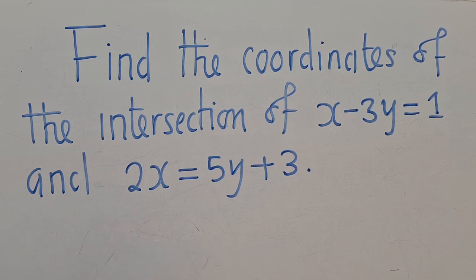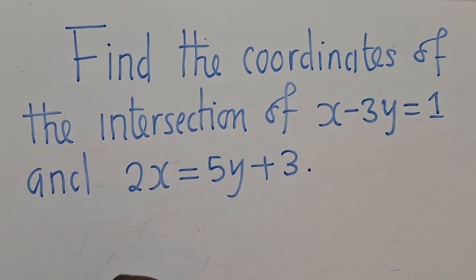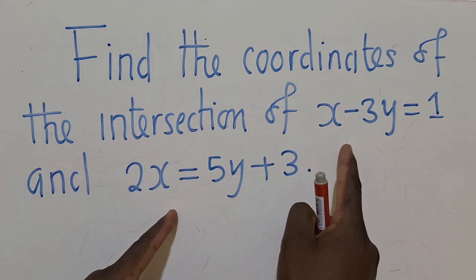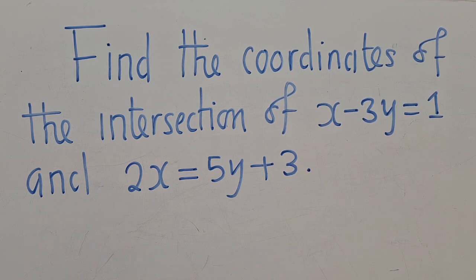We need to find the coordinates of the intersection of these two lines. So what it means here is we find where these two lines are meeting. And to find their intersection, we must equate them. Okay.